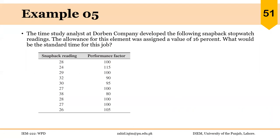Here is another example. The time study analyst at Durban Company developed the following snap-back stop-watch readings. The allowance for this element was assigned a value of 16%. These snap-back readings are basically observed times, and here each observation has been rated separately. We took 10 readings and rated each of the 10 readings.